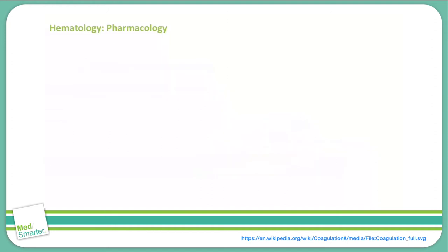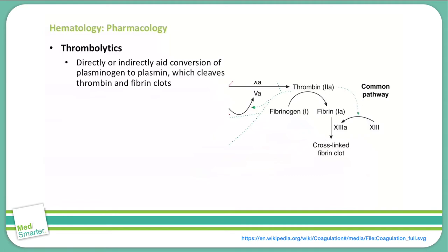Moving on, let's discuss thrombolytics. Thrombolytics come in and they directly or indirectly aid in a conversion of plasminogen to plasmin. That plasmin then comes in and breaks up our thrombin and fibrin clots — so it actually breaks up what has already formed and destroys that clot.